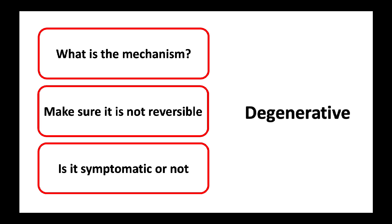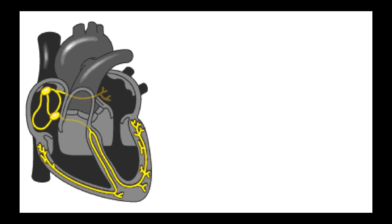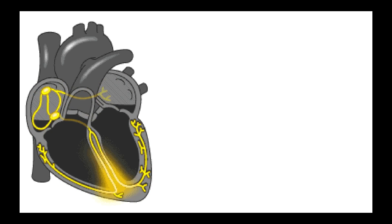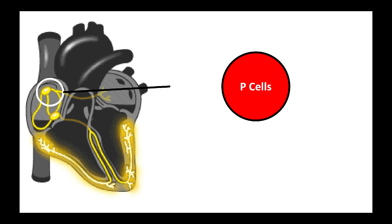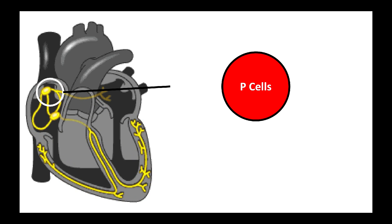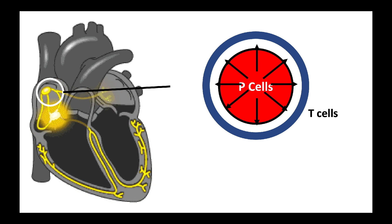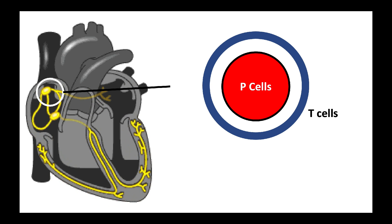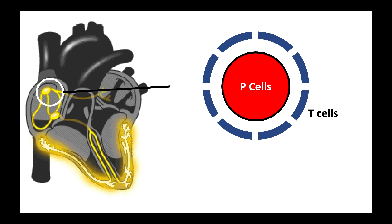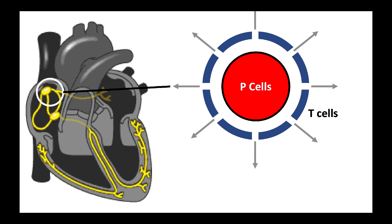An important aspect to understand bradyarrhythmia is to study the basic sinus node structure and function. A famous model for the sinoatrial node describes its structure as composed of two types of cells: core cells called pacemaker or P cells, which are responsible for the sinus node automaticity by generating depolarization waves. P cells are surrounded by a transitional layer of T cells, which acts as a barrier for the spread of depolarization waves. Interruptions exist within this capsule of T cells that function as exit pathways, so P cells produce a depolarization wave that exits through these pathways.